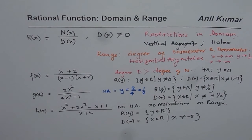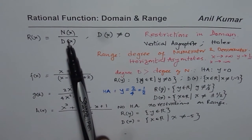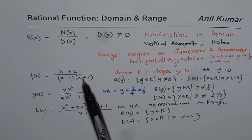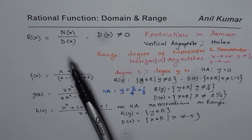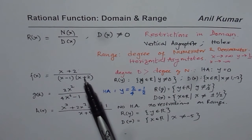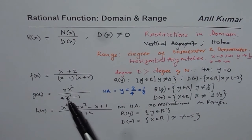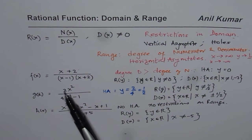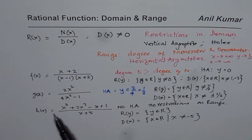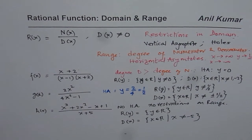To summarize: when comparing degrees of numerator and denominator for a rational function — if the degree of the denominator is higher, range excludes 0; if the degrees are equal, range excludes the ratio of the leading coefficients; if the degree of the numerator is higher, the range has no restriction.